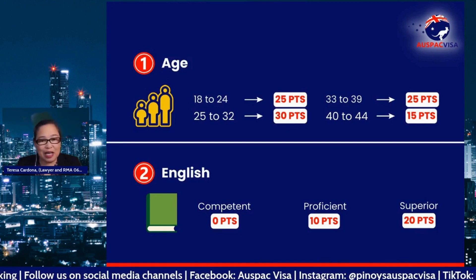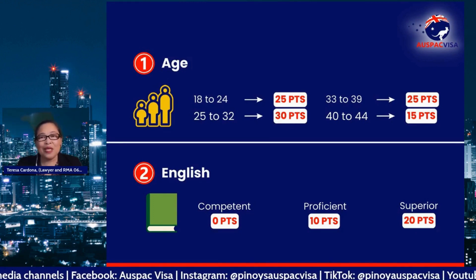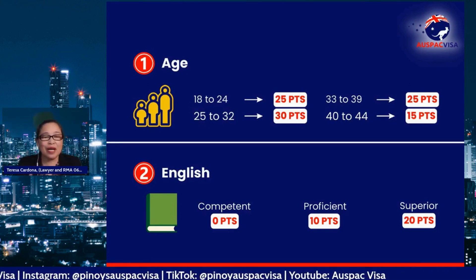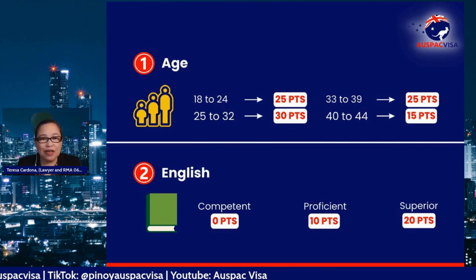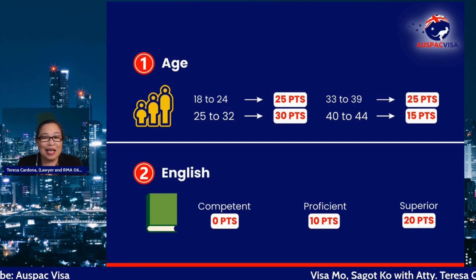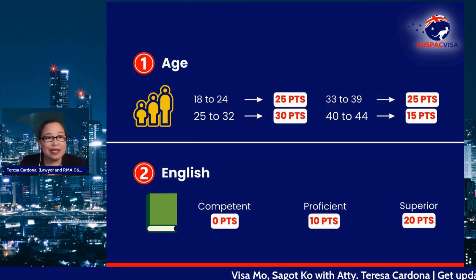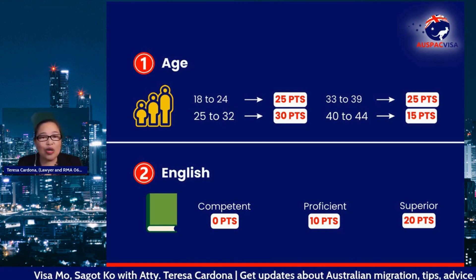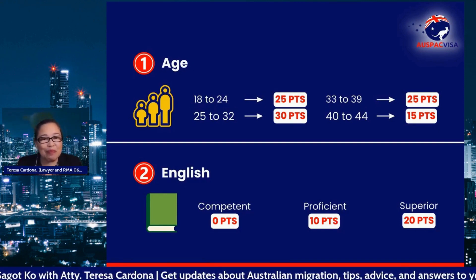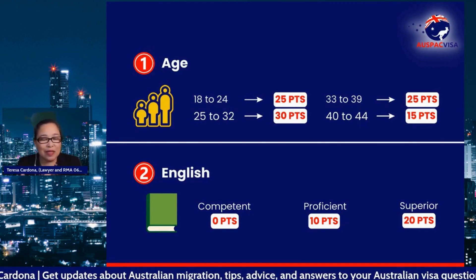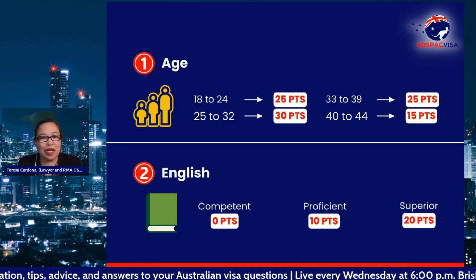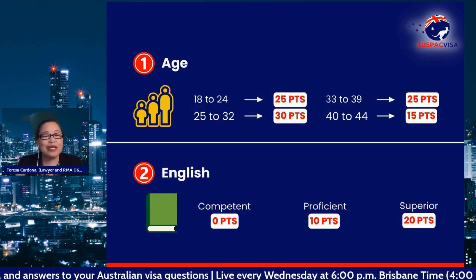Before we go into the age points, if you are applying to migrate to Australia, it is very important that you have a nominated occupation. You need to have a nominated occupation that is on the list. There is the MLTSSL and the STSOL.